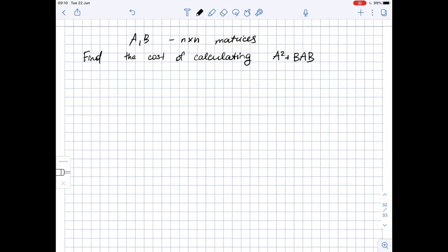A and B are n by n matrices and we need to find the cost of calculating A squared plus BAB.